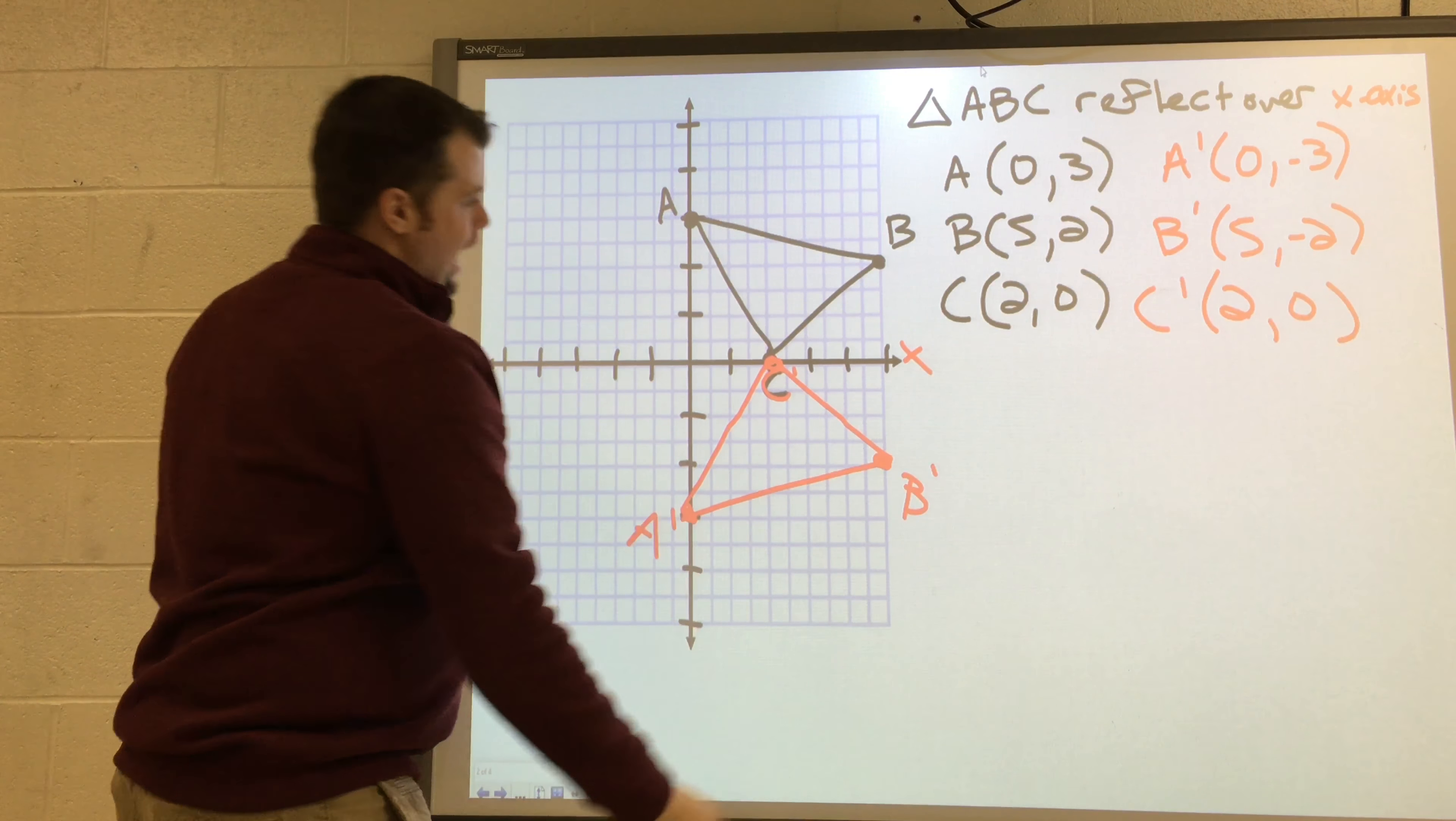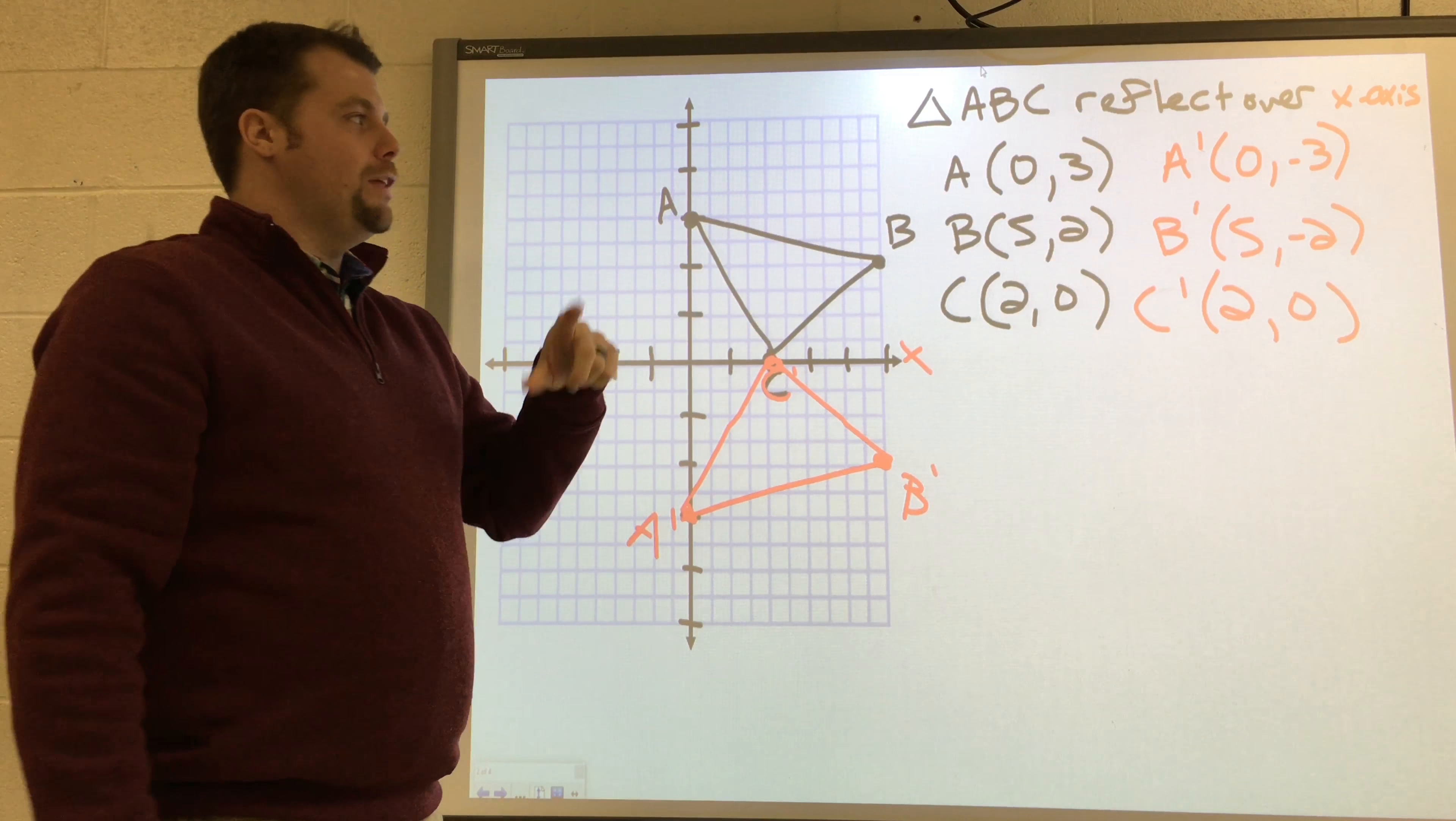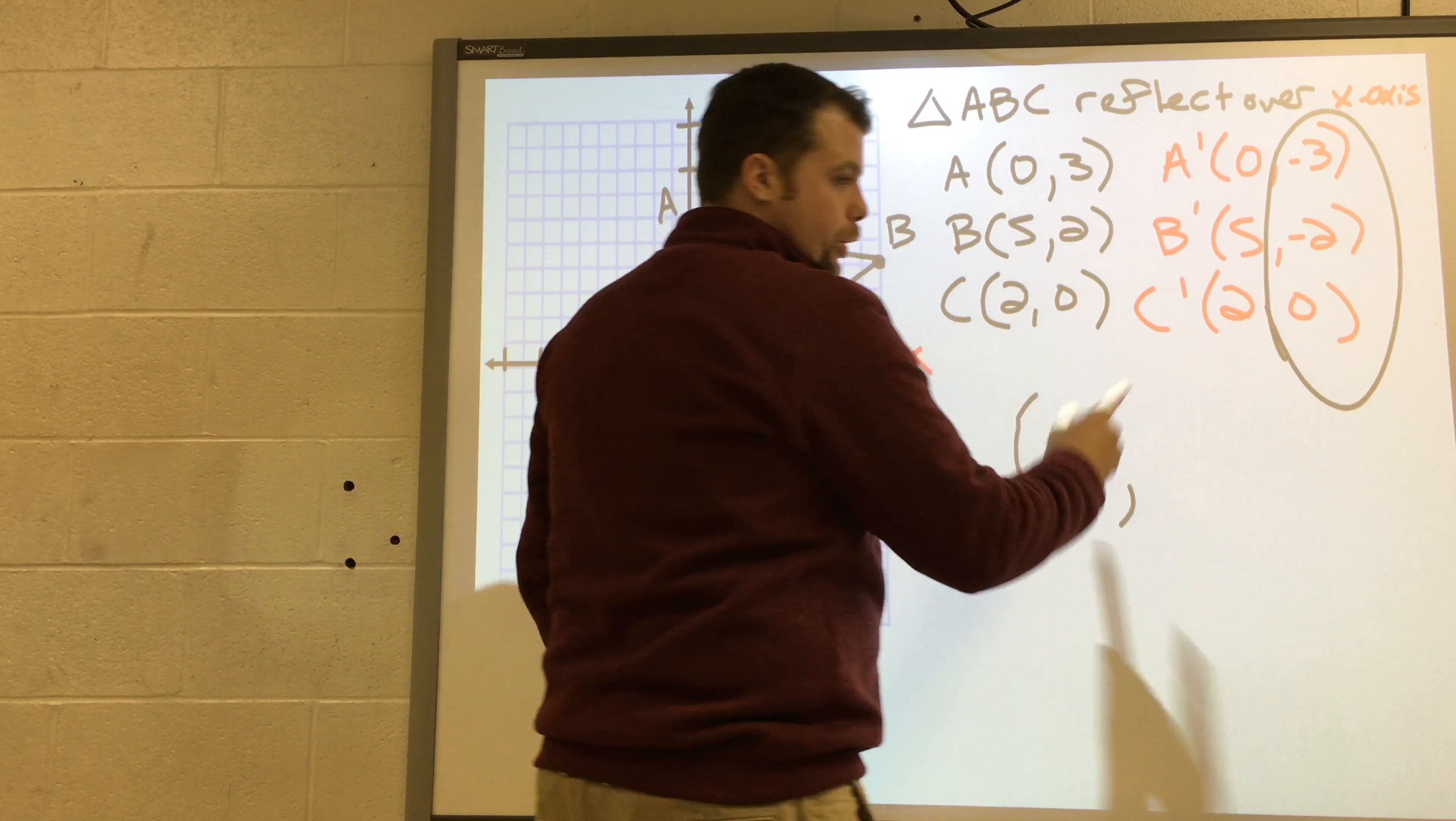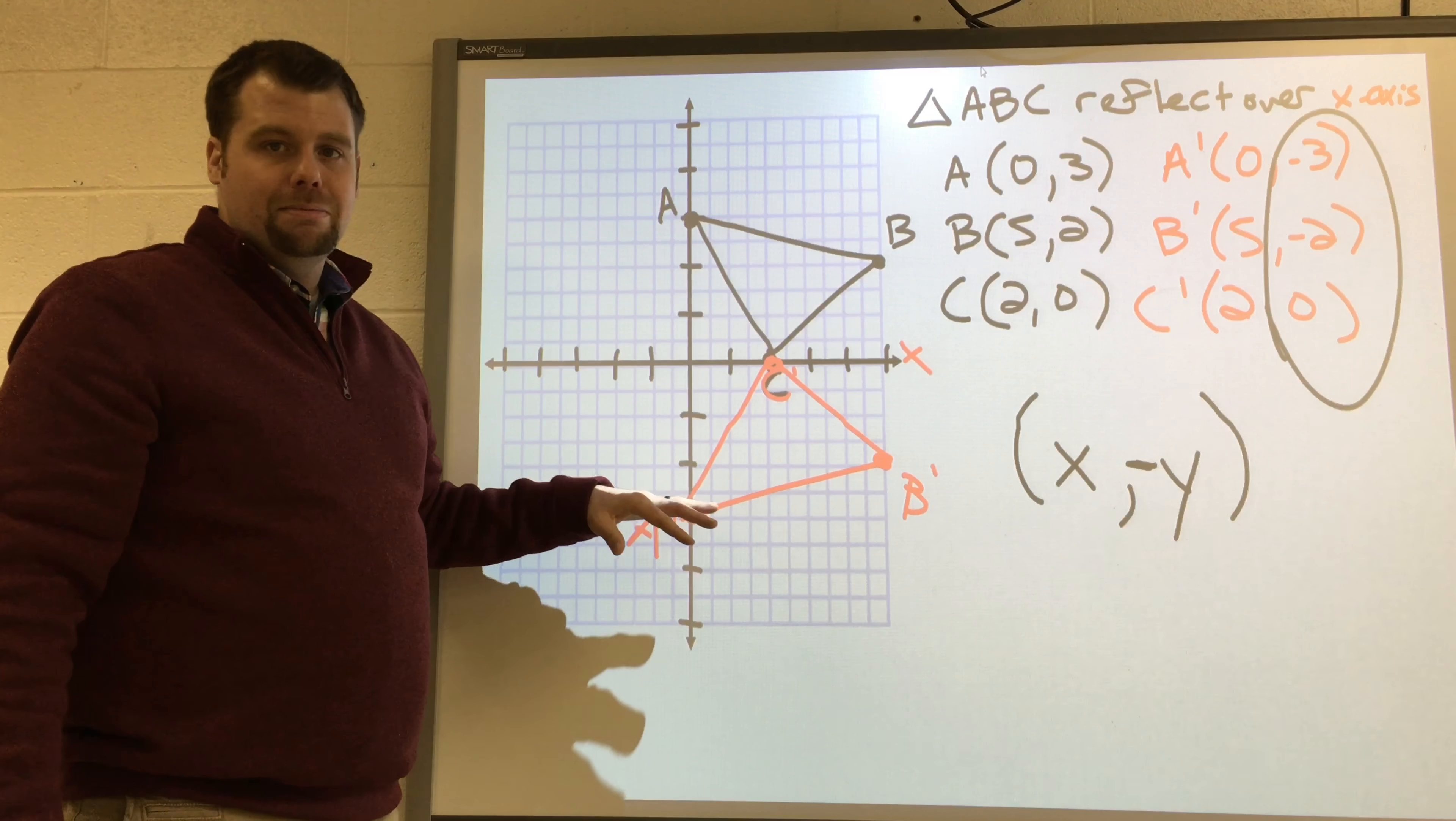So you can see that I took this triangle and reflected it over the x-axis. Now, what is important to realize here is that when I reflect it over the x-axis, you take all your x's and your y's, and what you do is you just change the sign on all your y's. So if they're positive, you make them negative.